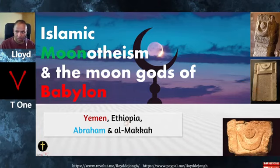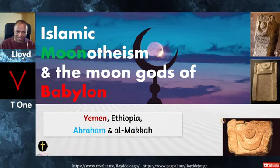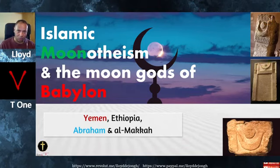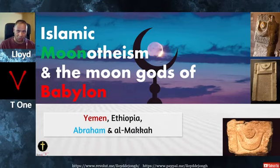We'll be talking about Yemen, Ethiopia, Abraham, and Makkah — Al-Makkah. These are early pagan images from Yemen and from Ethiopia. You'll notice here the crescent and the early star; in some cases they're a sun disk, but also a star disk. These are early images that date to the first millennium BC — this symbolism goes way back.